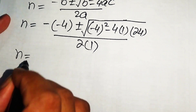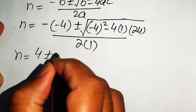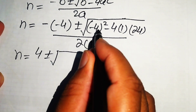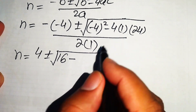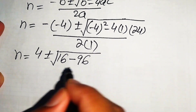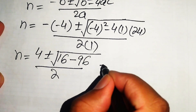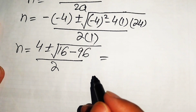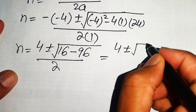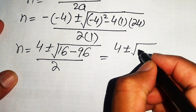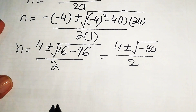Simplifying: negative times negative gives positive 4, plus or minus the square root of 16 minus 96. Since 4 times 24 equals 96, we have 16 minus 96 equals minus 80. So the expression becomes 4 plus or minus the square root of minus 80, all divided by 2.